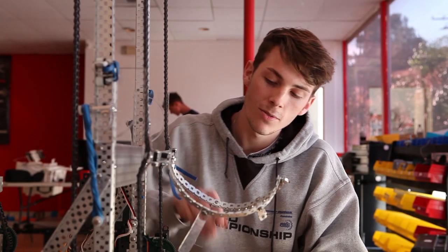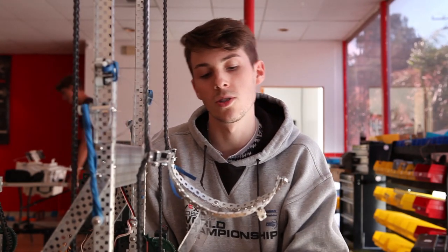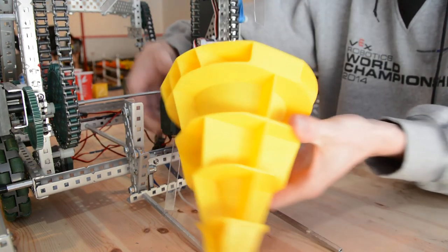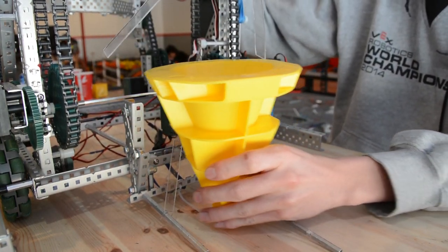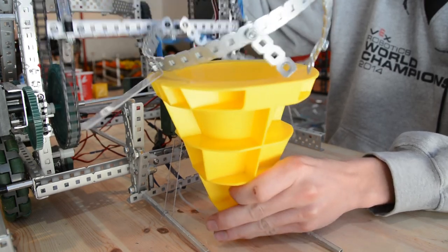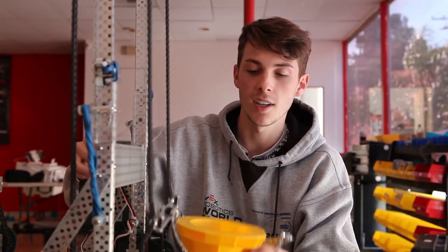We've got this forklift style intake on the front of the robot, and the goal is to orient the cone upside down so that when this guy reigns down from above and grabs it like this, it'll be in the right position.